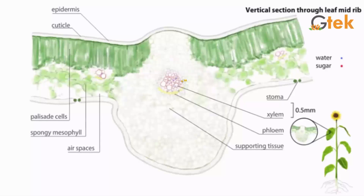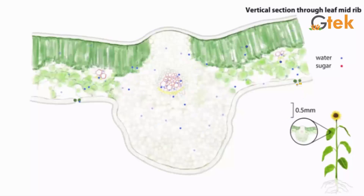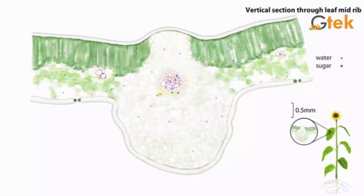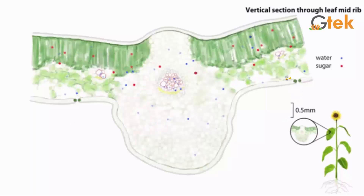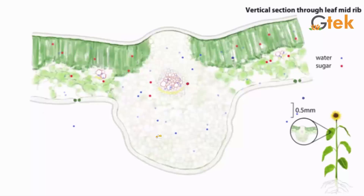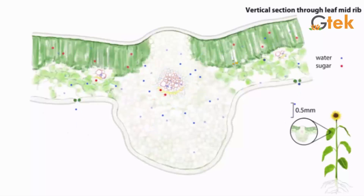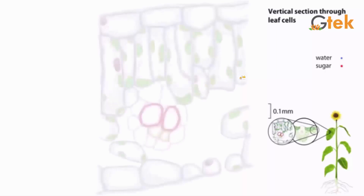This is the vertical section through the leaf mid-rib. Here the cuticle is presented, this is epidermis, and this is the stroma. The xylem and phloem are presented here. In the stroma, the water molecule is getting released from the leaf mid-rib. You can see how water and sugar molecules are transferred through the stem in this vertical section through the leaf mid-rib.